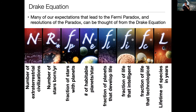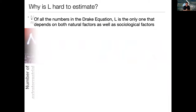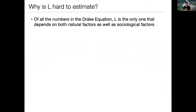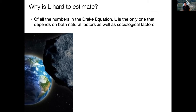Here's the Drake equation — the familiar slide we've been looking at all quarter. We've talked about all the first six numbers, and in this half of the lecture I just want to focus on L, which is the lifetime of a civilization in years overall. So why is L hard to estimate? Of all the numbers in the Drake equation, it's the only one that doesn't depend on the laws of nature. It depends on random chance in the universe, both on natural factors as well as sociological factors. An example of a natural factor is the fact that there have been major extinction events on the planet due to outside influences — on Earth, there have been five major extinction events to date.